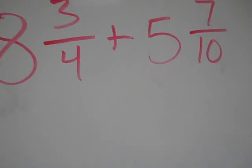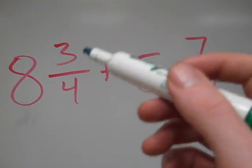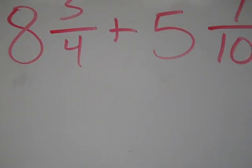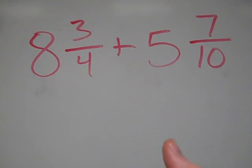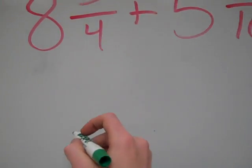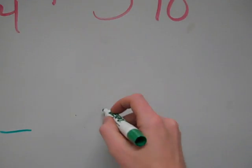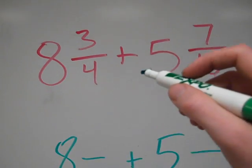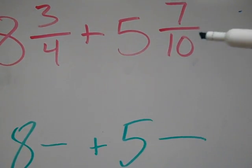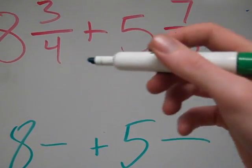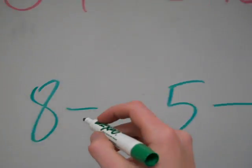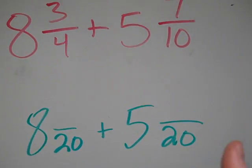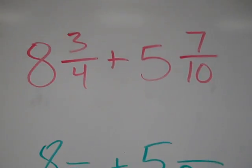Just one last example, and then I'll let you go. Here I have 8 and 3/4 plus 5 and 7/10. Again, you can try this on your own, or you can pause it and then check to see if you did it right. So my denominators are 4 and 10, a lot of people think it's 40. But actually, if you start, 10 doesn't work for 4, but 20 does work for 4. 20 is the lowest common denominator. Or you could use 40s too, but 20 is a lower number.